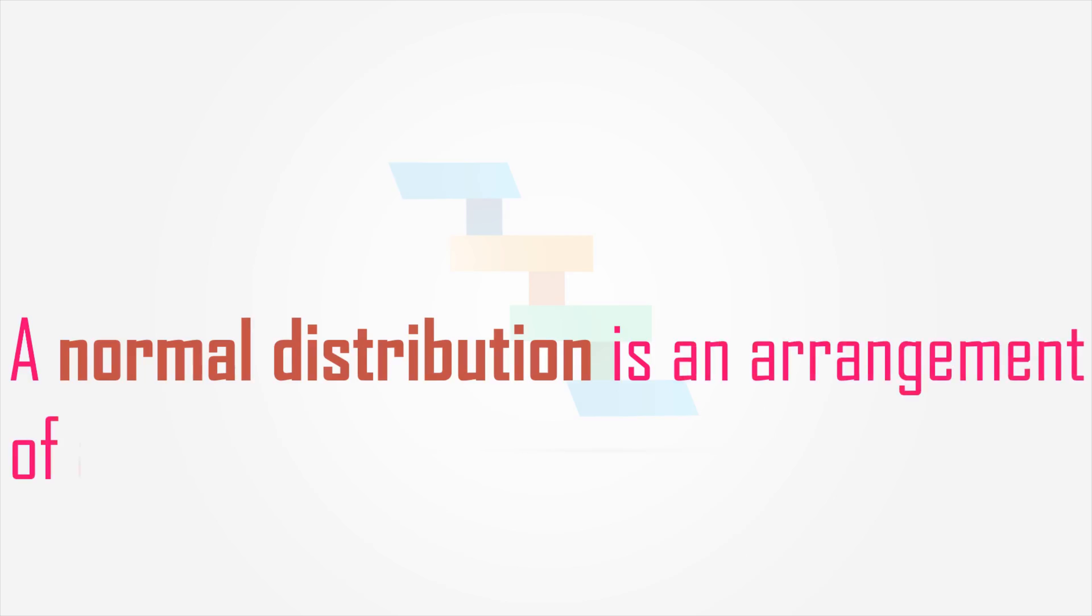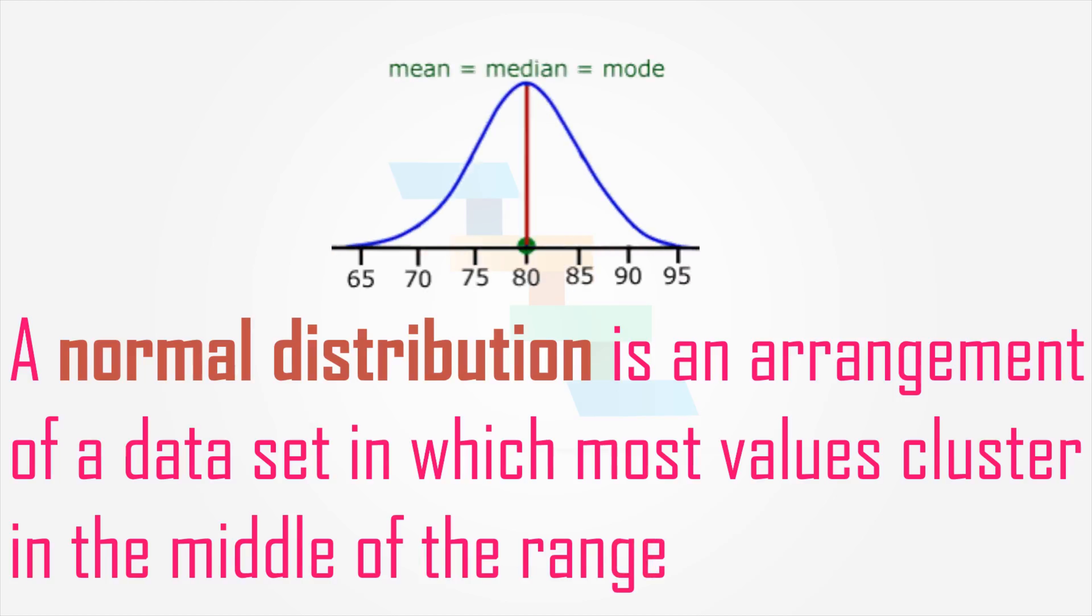What is normally distributed? A normal distribution is an arrangement of data set in which most values cluster in the middle of the range. A normal distribution has a bell-shaped density curve described by its mean and standard deviation. The density curve is symmetrical centered above its mean.